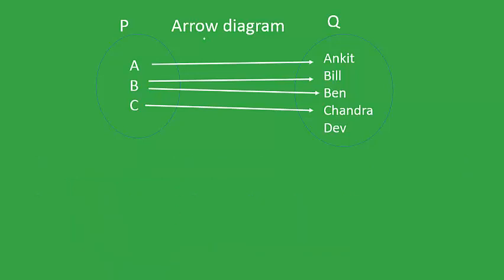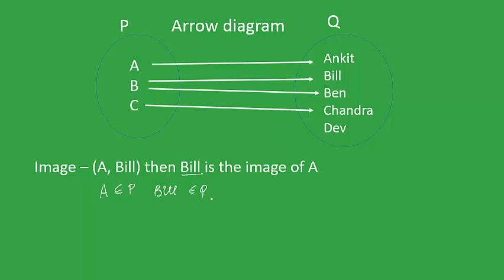Now let's look into the important definitions. The first one is image. As we saw in the last slide, the element (A, Bill) was an element of the relation, and A was in set P, while Bill was in Q. So the element Bill is called the image of A under the relation R.